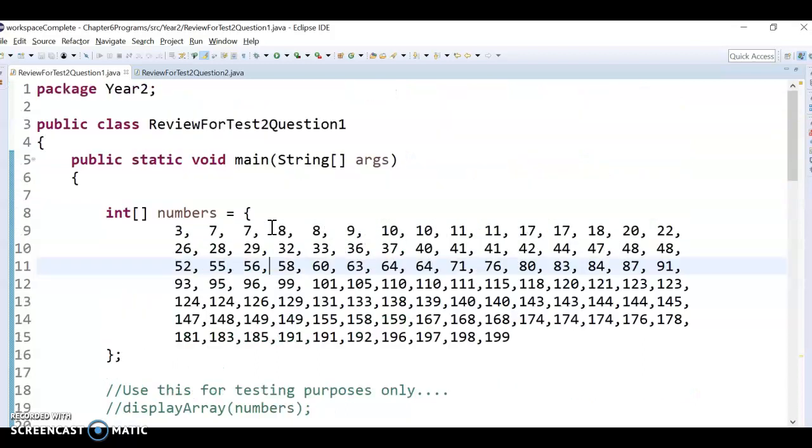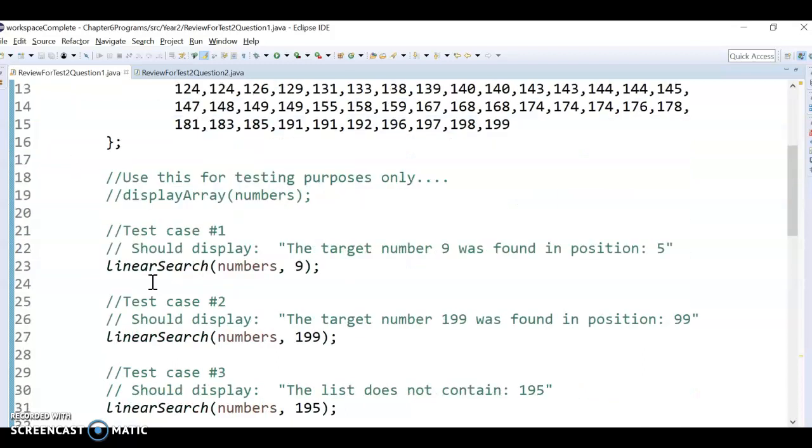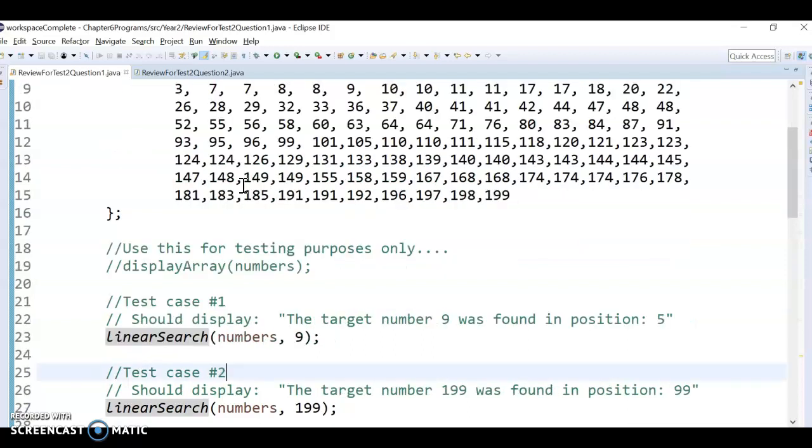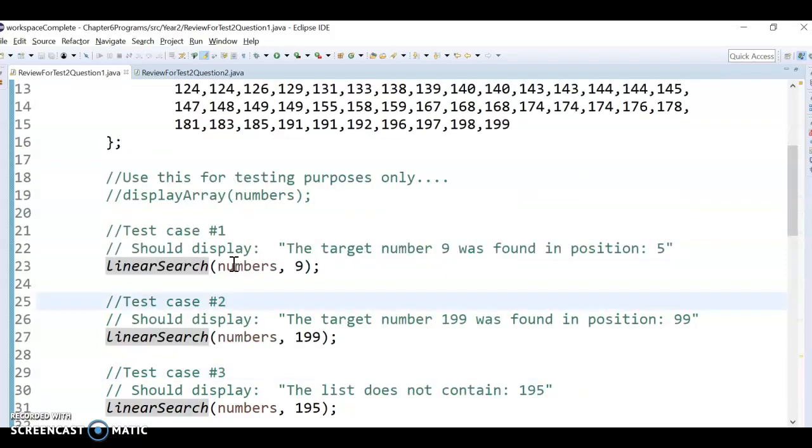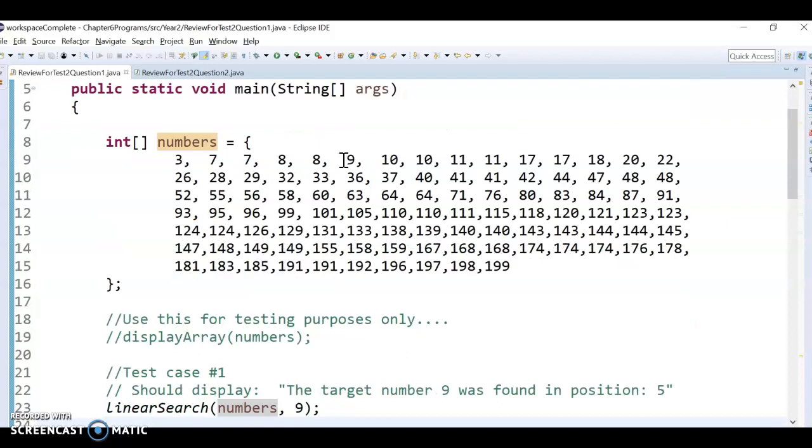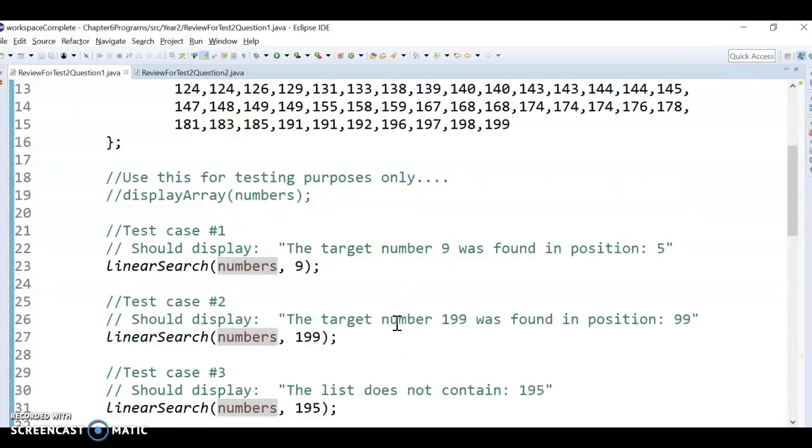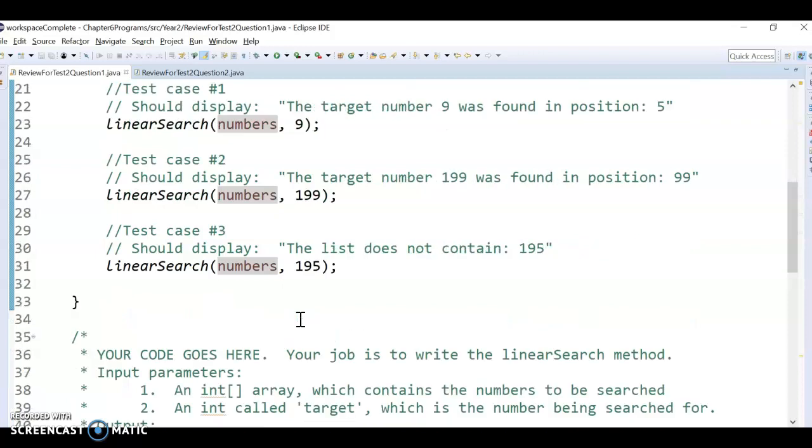the code you have to add is in this method called linear search. So what we have in main here is just the array itself. And then you have to write in a method that takes in the array and an int and then say like where it was found. So like 9 is found here, which is position 0, 1, 2, 3, 4, 5, right? So you just have to say where it is found. Okay, so these are sort of test cases to make sure your method works right.